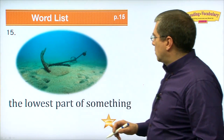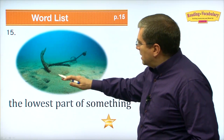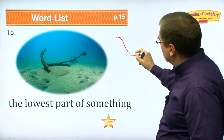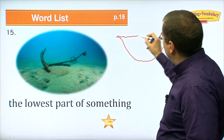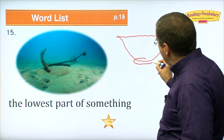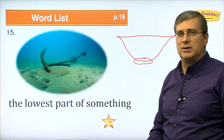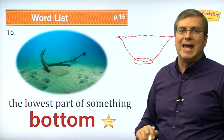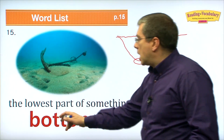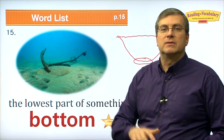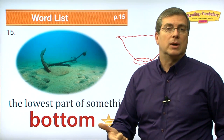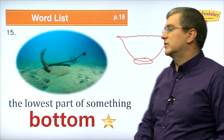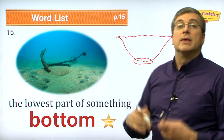Number fifteen. Underwater — the lowest part of something. Imagine the ocean: here's the water, and we're talking about the very lowest part. What do we call it? We call it the bottom. The bottom of the ocean or the bottom of the lake. Two syllables: bot-tom. The bottom of something is the lowest part of something.